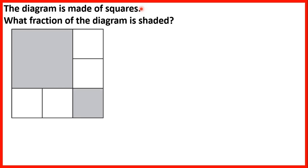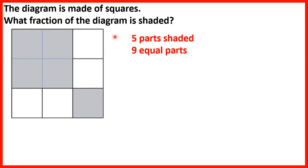The diagram is made of squares. What fraction of the diagram is shaded? With fractions, the numerator tells us how many equal parts we have and the denominator tells us how many equal parts there are altogether. In this diagram the parts aren't equal — one shaded square is bigger — but if we split that big square into 4 small squares, all squares are the same size. Now we have 5 equal parts shaded and 9 equal parts altogether, so the fraction shaded is 5 ninths.